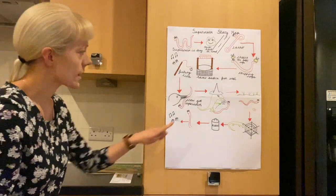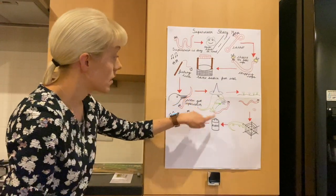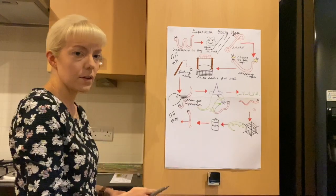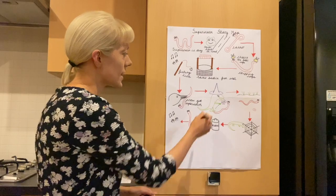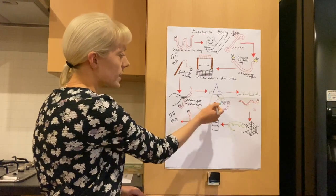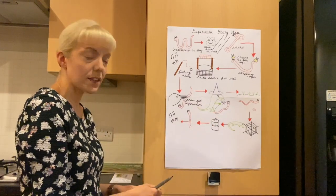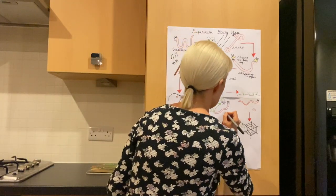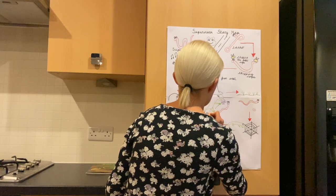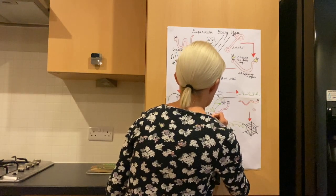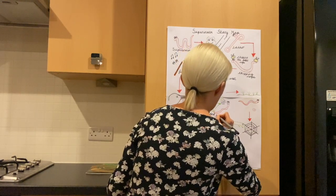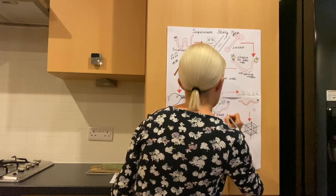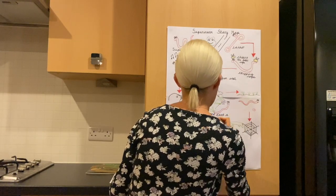And then what happened next? Let's follow the arrow. Who was this character that appeared in the story? Can you remember? That's right, it was the lizard, wasn't it? And what did the lizard do? He was a wizard, wasn't he, and he cast a magic spell, didn't he? So 'lizard cast a magic spell.'